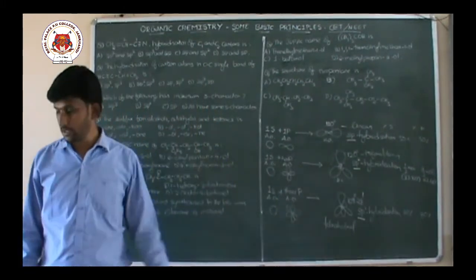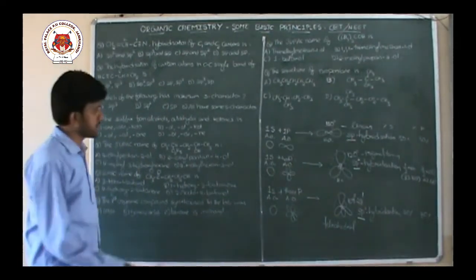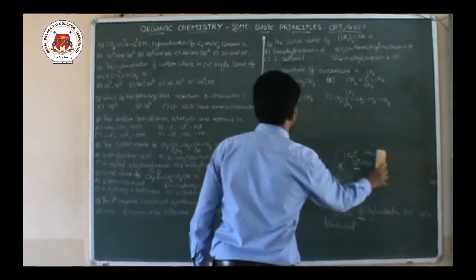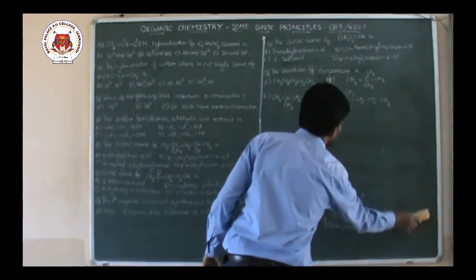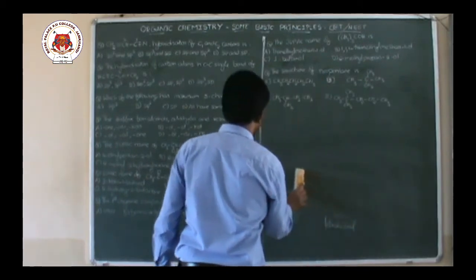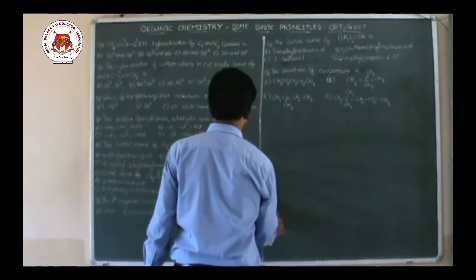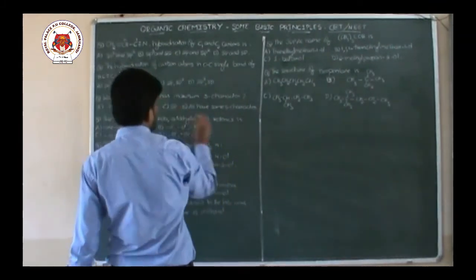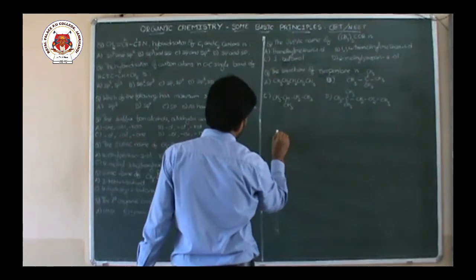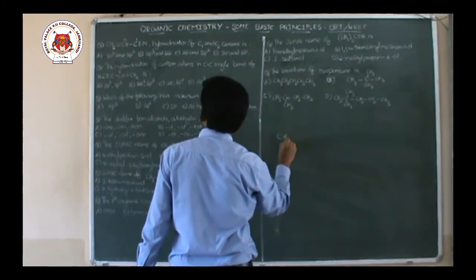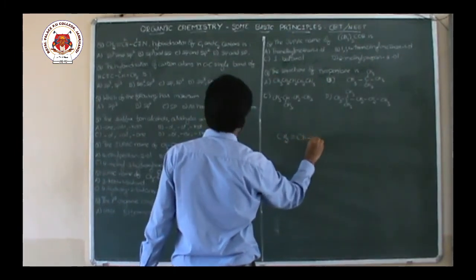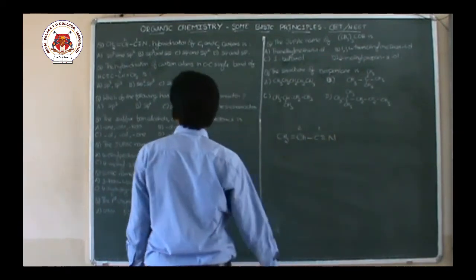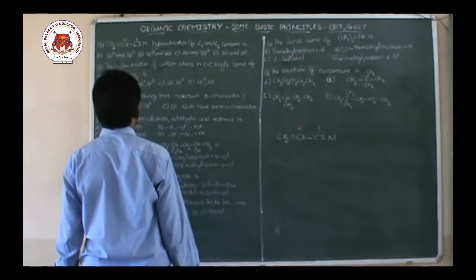Now we will directly go into the questions. First question: the compound given is CH2 double bond CH, single bond C, triple bond N. We have C1 and C2. Find the hybridization of C1 and C2 carbon.